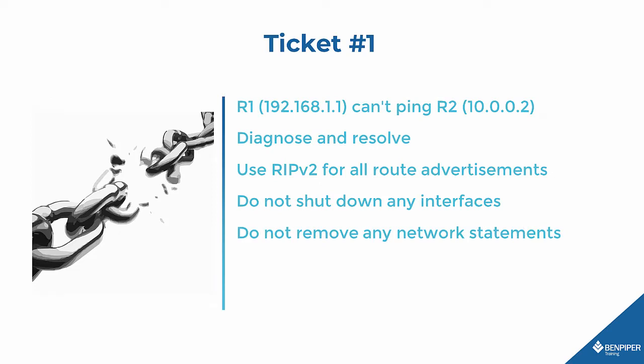Ticket number 1. R1 192.168.1.1 can't ping R2 10.0.0.2. Diagnose and resolve. Use RIPv2 for all route advertisements. Do not shut down any interfaces and do not remove any network statements.